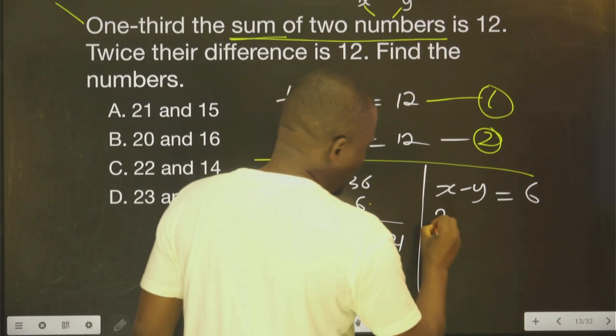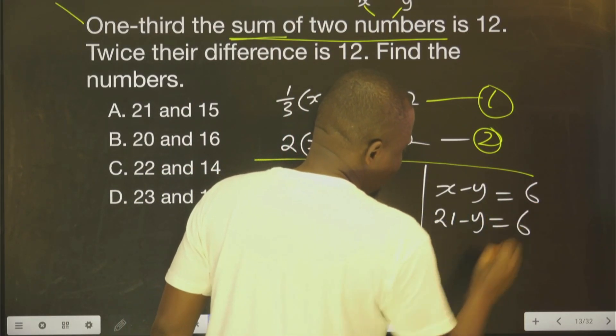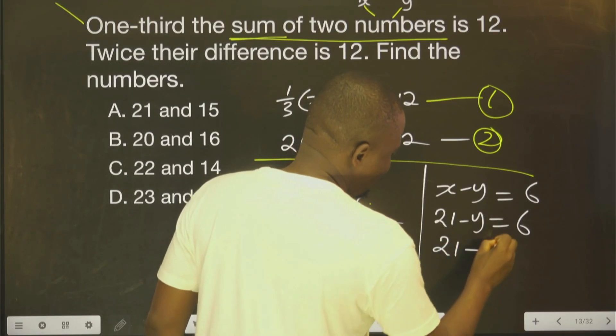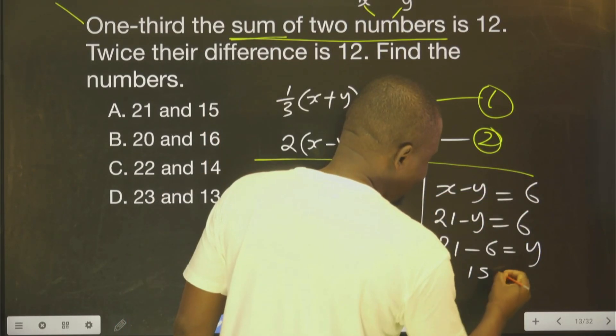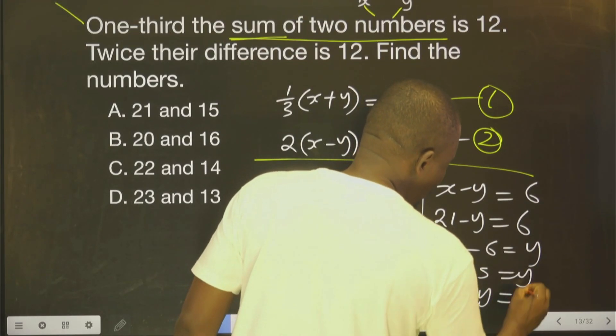I know S to be 21. Minus Y equals 6. Then I can say 21 minus 6 equals Y. By moving this to this side, I move this to this side. So Y therefore is equal to 15.